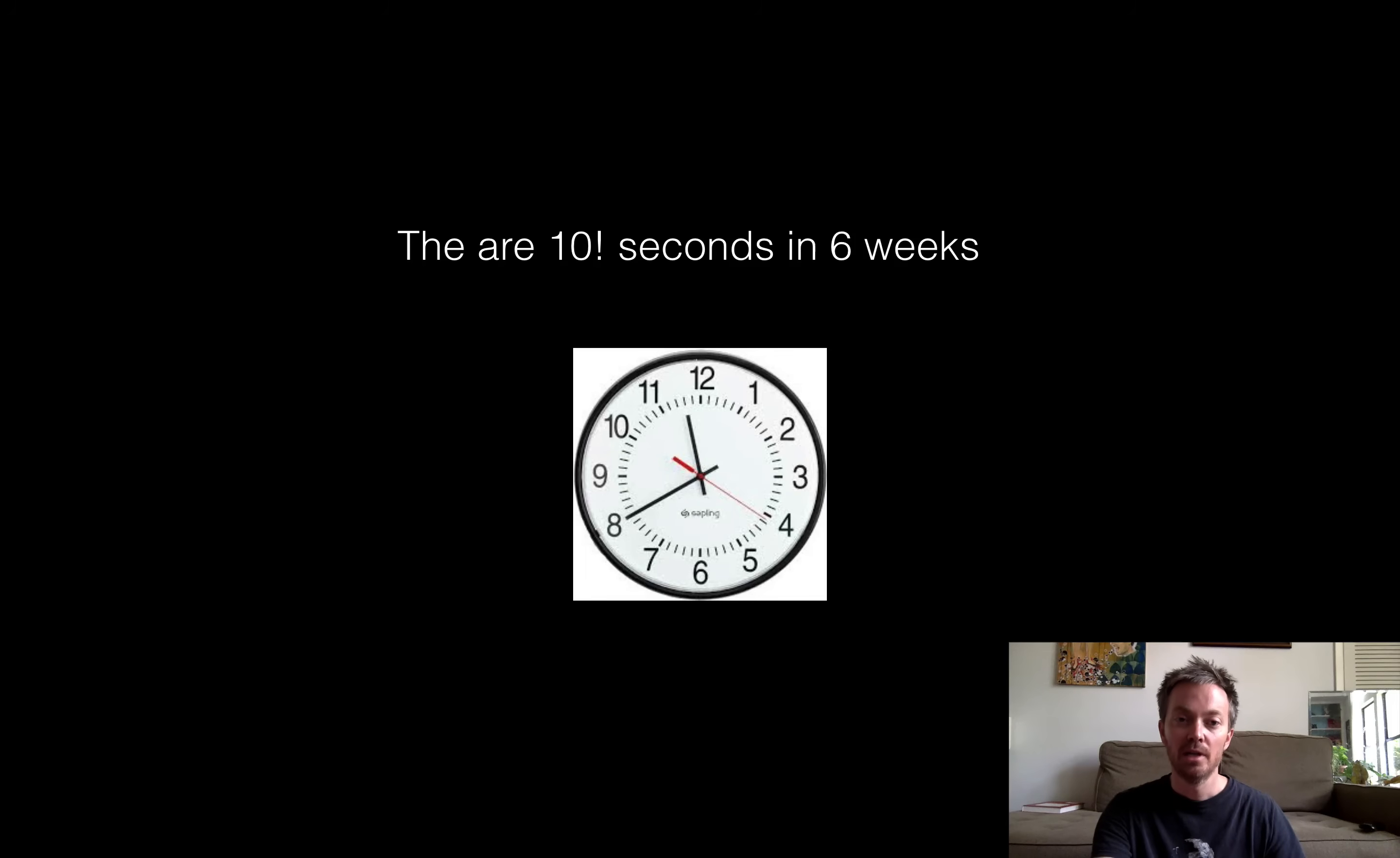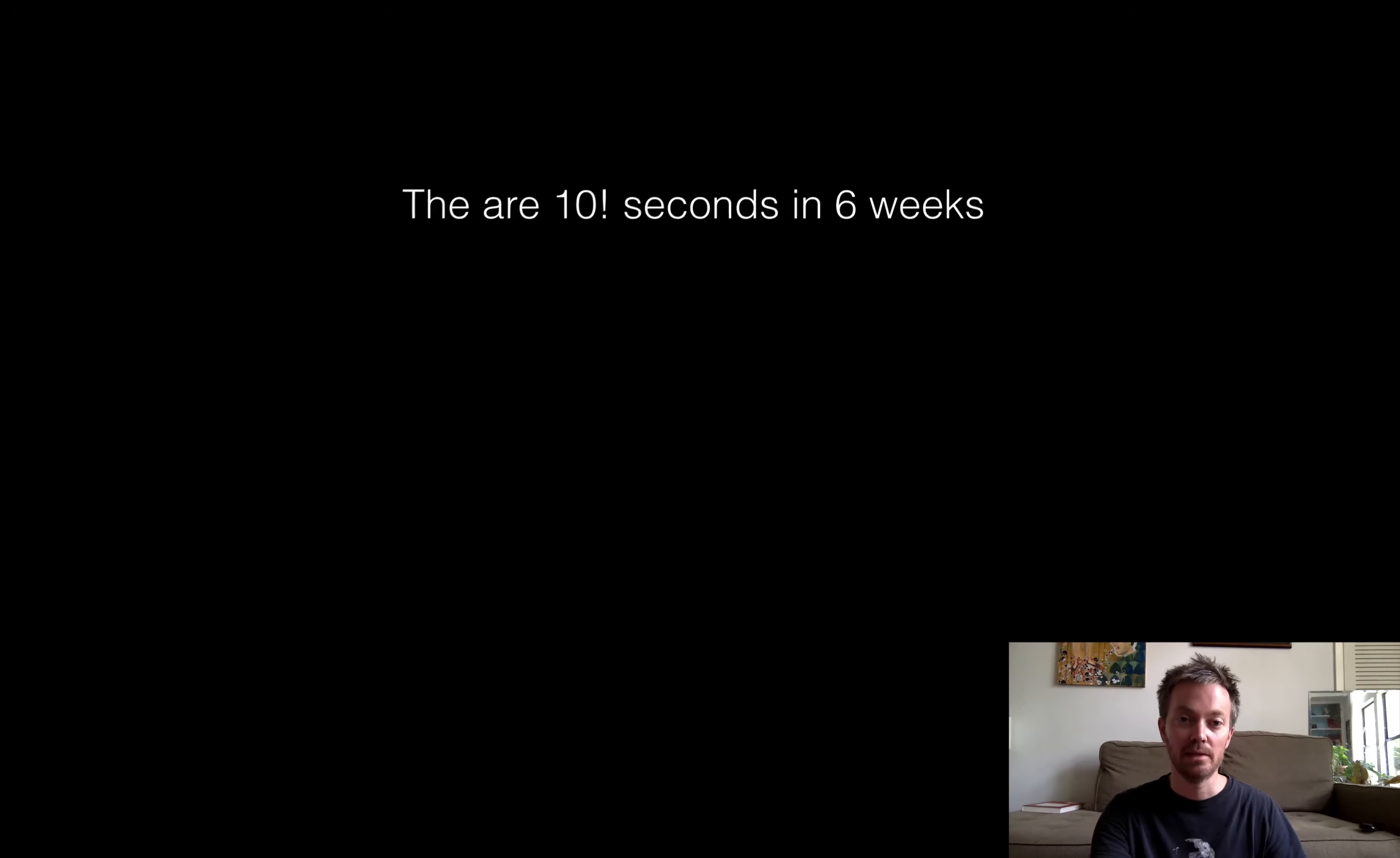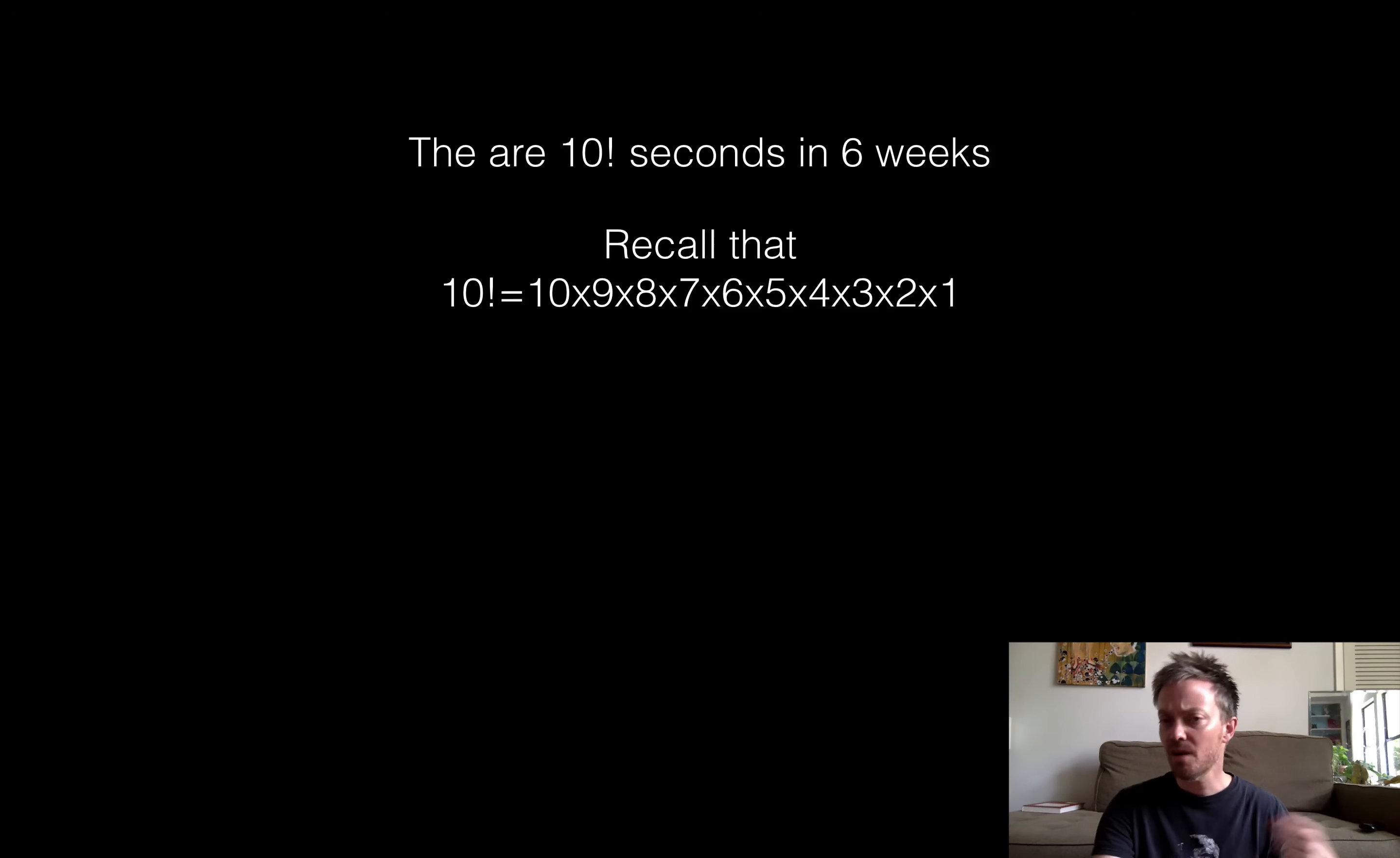So number two. So this is one that I've seen, it's been making the rounds on social media for quite a while now. It turns out that there are 10 factorial seconds in six weeks. So let's talk about how that is real quick. Let's talk about the mathematics. So remember that if maybe you haven't seen factorials, 10 factorial is just a shorthand way of saying 10 times 9 times 8 times 7 times 6 times 5 times 4 times 3 times 2 times 1.